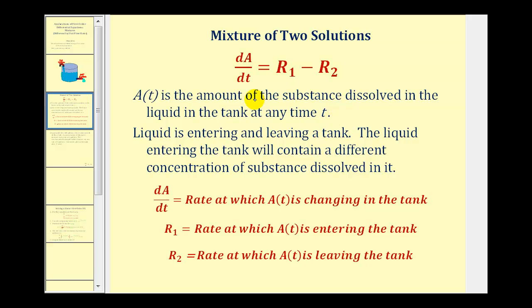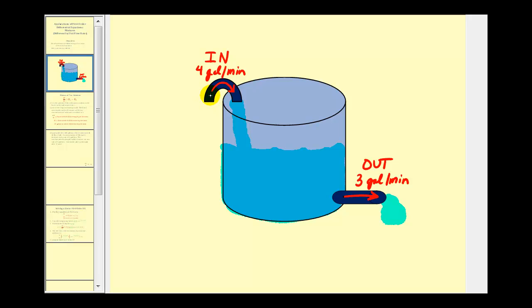If this is the case, we can model the change of the mixture using the differential equation dA/dt equals r sub one minus r sub two, where dA/dt is the rate at which A of T is changing in the tank, r sub one is the rate at which A of T is entering the tank, and r sub two is the rate at which A of T is leaving the tank. To get a visual of this, we have a certain concentration being pumped into our mixing tank and then pumped out. For our example, the inflow rate and outflow rate will be different.